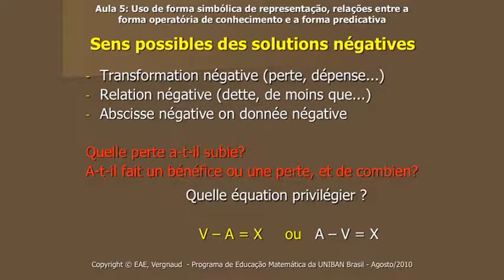Não há só as transformações negativas que podem fornecer sentido. Podemos encontrar uma transformação negativa, uma relação negativa — uma dívida, uma relação de comparação do tipo 'menos que', um abscisso negativo como no caso da temperatura, ou um dado negativo. No comércio, por exemplo: sou sensível ao fato de que a contabilidade em parte dupla foi inventada na Itália no século XVI, ao mesmo tempo que a álgebra.